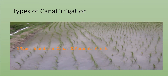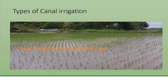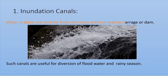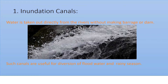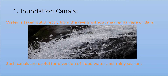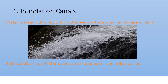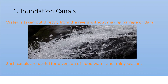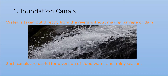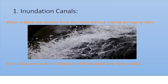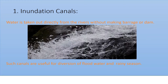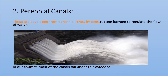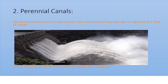In inundation canals, water is taken out directly from the rivers without making a bridge or a dam. In perennial canals, these are developed from perennial rivers by constructing a barrage to regulate the flow of water. Perennial canals provide a reliable water supply throughout the year.